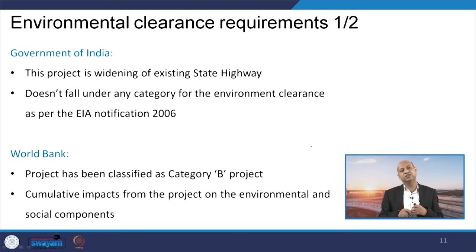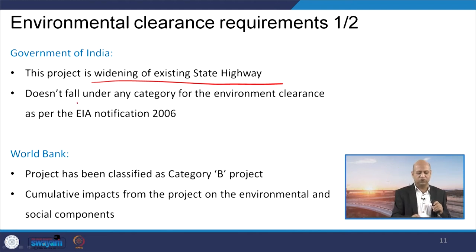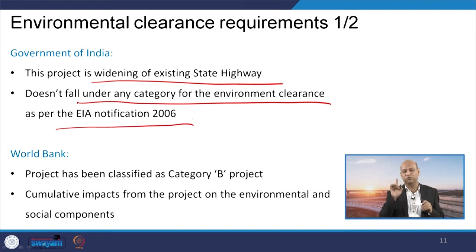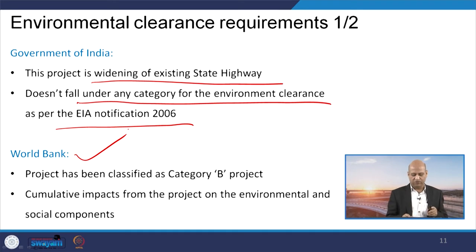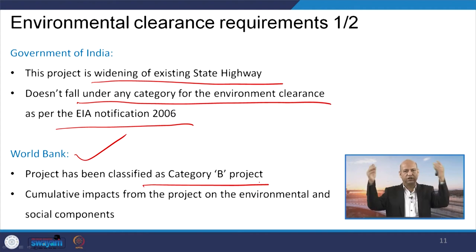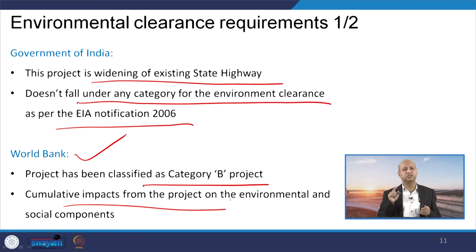An interesting aspect regarding environmental clearances: as per Government of India rules, this project is essentially a widening of an existing state highway, so it does not fall under any category requiring environmental clearance per the EIA Notification of 2006 — no detailed EIA is required. However, since funding came from the World Bank, who classified it as Category B under their guidelines based on cost, stretch, and assessed impacts, a study of cumulative impacts on environmental and social components was required, making this EIA necessary.